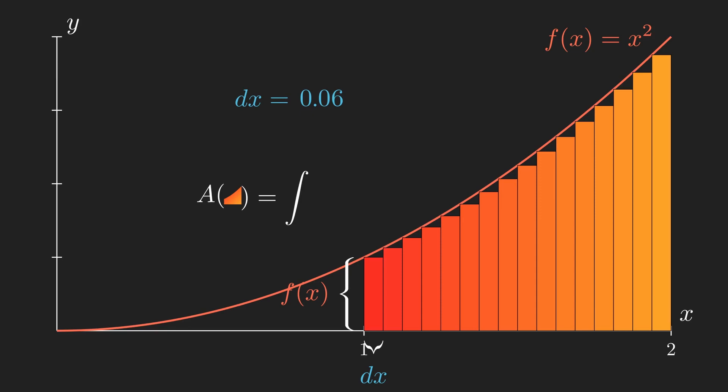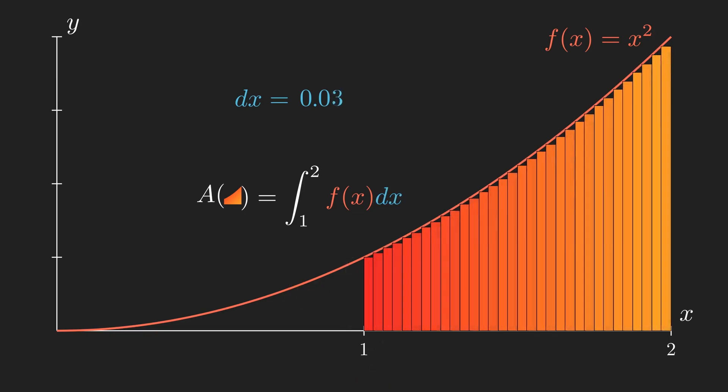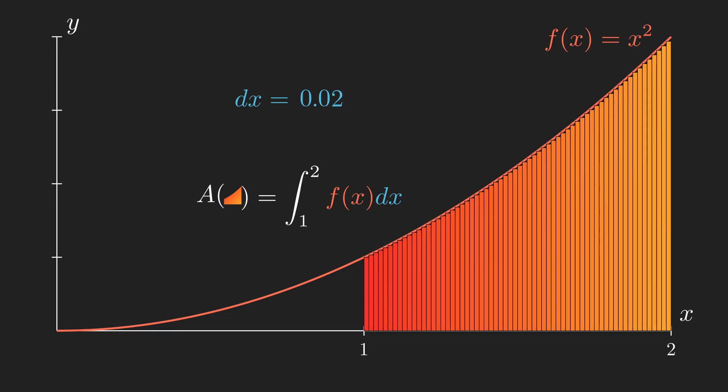We want the integral between 1 and 2, and since we want the integral of our rectangles, it's the integral of f of x times dx. This effectively gives us a smooth sum of infinitely many, infinitely small areas which make up the area under our curve.